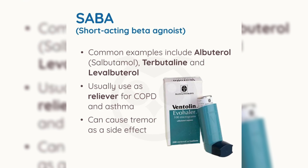Short-acting beta agonist, SABA. Common examples include albuterol, salbutamol, terbutaline, and levalbuterol. Usually used as a reliever for chronic obstructive pulmonary disease (COPD) and asthma. It can cause tremor as a side effect.